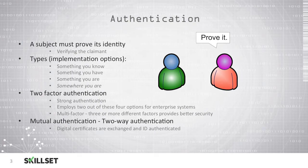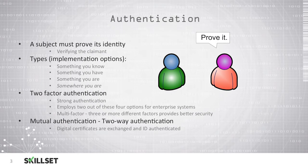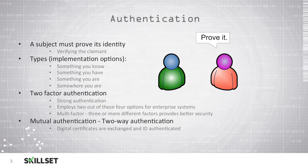There are several ways we can do this. The first way is by using something the user knows. The most common something-you-know type of authentication is a password. We could also use something that a user has, such as a token or some other type of device that will allow us to verify that the individual is who they claim to be.